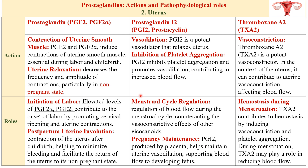Prostacyclin is helpful in menstrual cycle regulation and pregnancy maintenance. During pregnancy, it causes dilation of blood vessels ensuring adequate blood supply to the developing placenta and fetus, providing oxygen and nutrients to the growing embryo. In menstrual cycle regulation, prostacyclins help regulate the blood flow to the uterus, which is crucial for preparation of the endometrium, counteracting the vasoconstrictive effects of other eicosanoids.